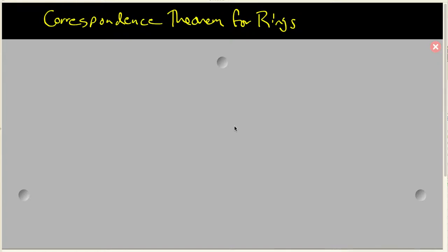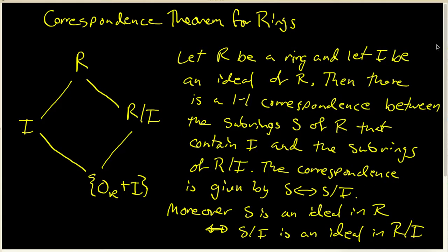In this video, we are going to look at the proof of the correspondence theorem for rings. Let's first look at a statement of the theorem. We're going to let R be a ring and I an ideal of R. The correspondence theorem says that there is a one-to-one correspondence between the subrings S of R that contain I and the subrings of R mod I.